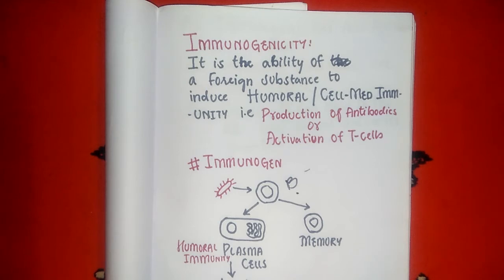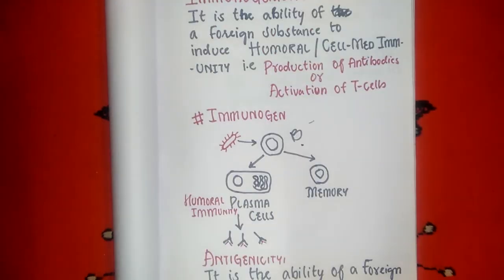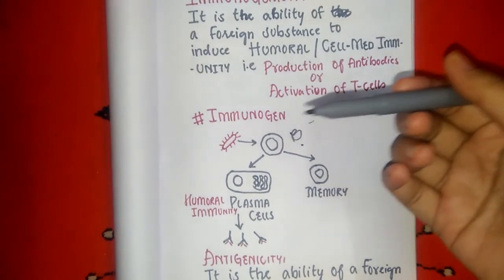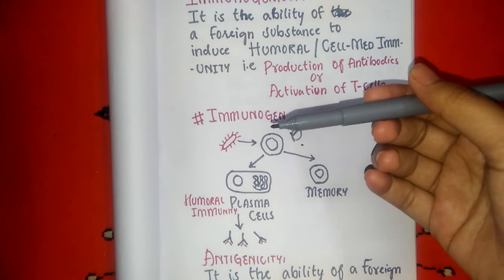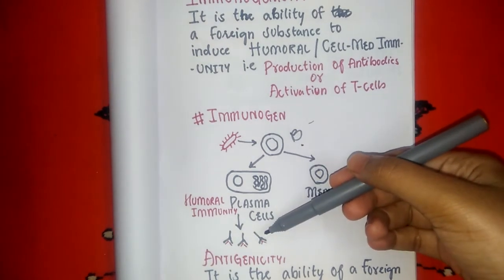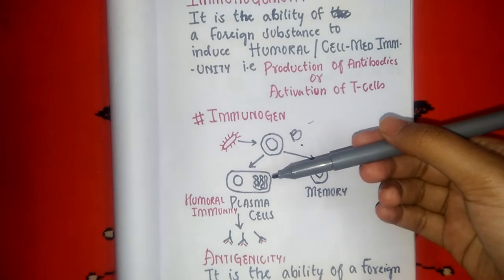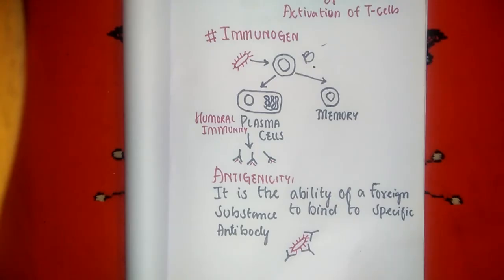When the B cells get stimulated, they differentiate into memory B cells and plasma cells. These plasma cells in turn produce antibodies. So you understand that the bacteria entering the body is inducing the formation of antibodies — hence it is an immunogen.